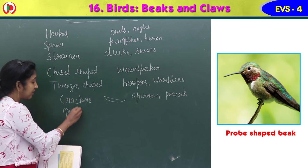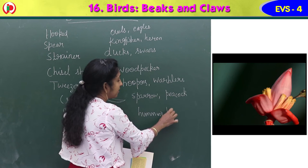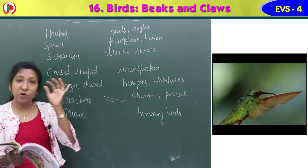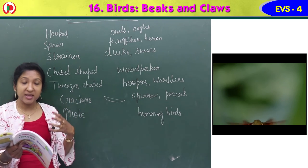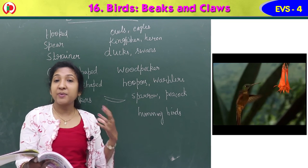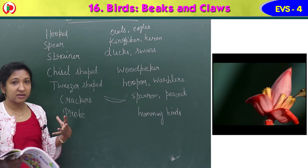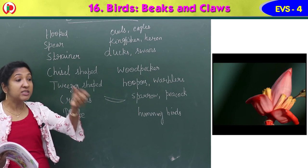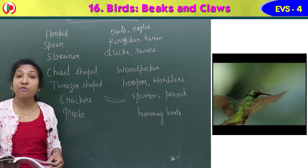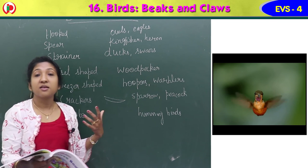The last beak type is the probe-shaped beak. Hummingbirds have probe-shaped beaks. It is long and slender — like a straw. You use a straw to drink juice; in the same way, hummingbirds use this straw-like long slender beak to suck nectar from flowers. This beak helps them suck the sweet liquid, or nectar, from flowers.